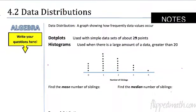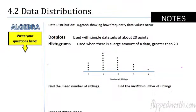A data distribution is a graph showing how frequently data values occur. This is important because we want to know what's going to happen, or we want to know how often something has happened. There are two ways we're going to look at it today.